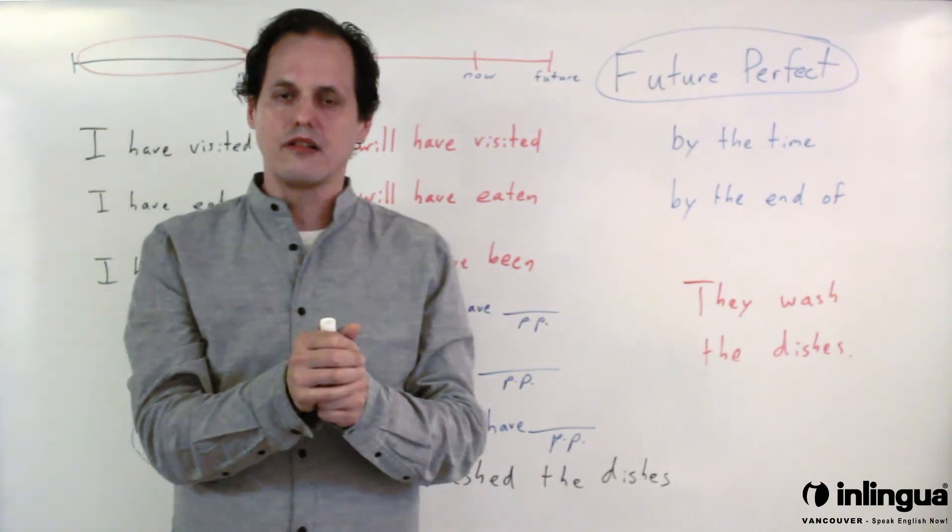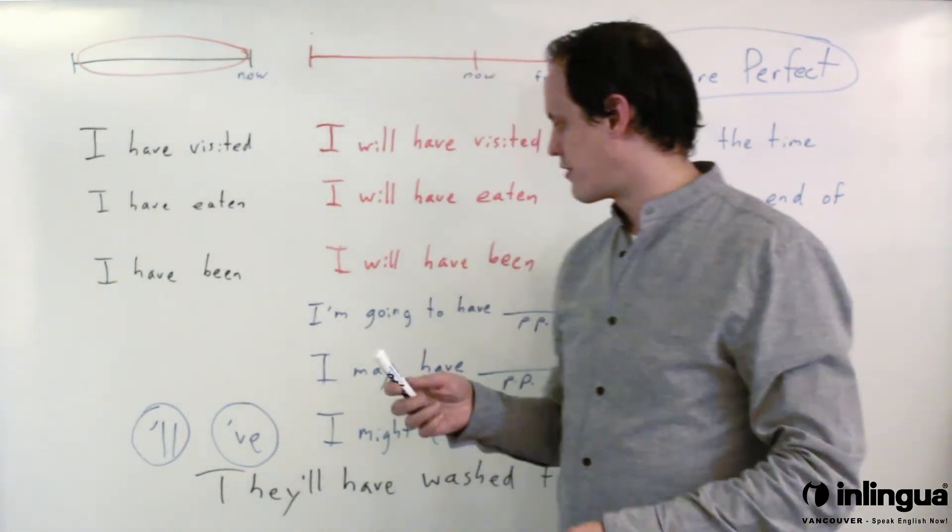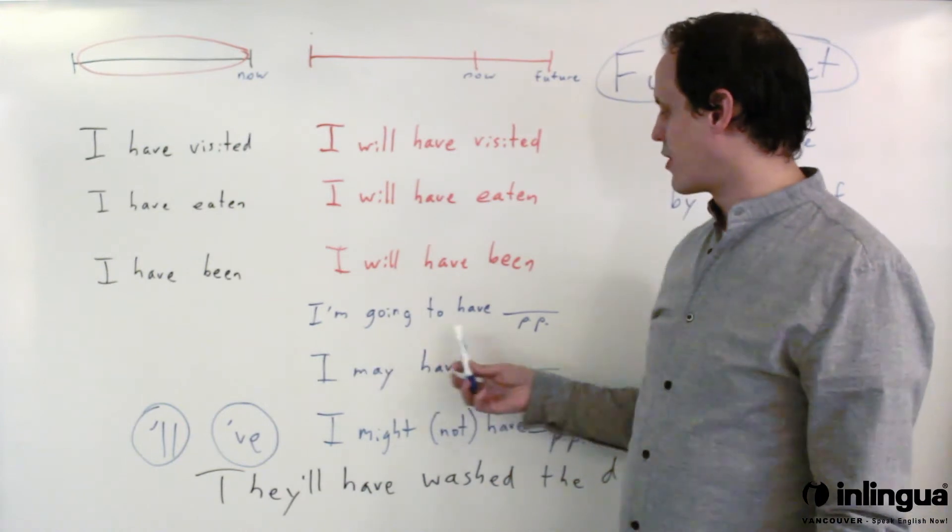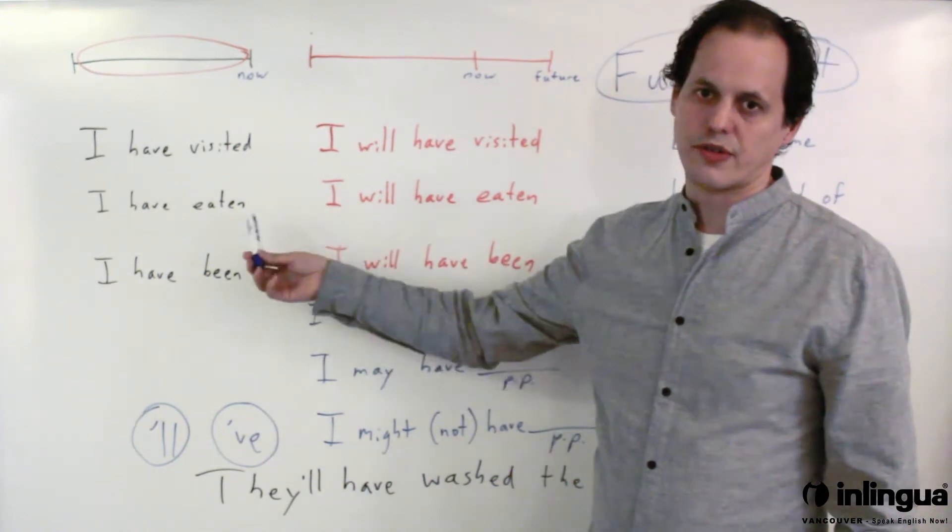You don't have to use will of course, you can use be going to, another way to talk about the future. So you can say I'm going to have past participle, I'm going to have visited, I'm going to have eaten.